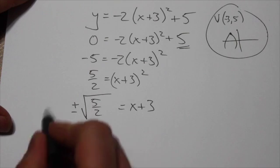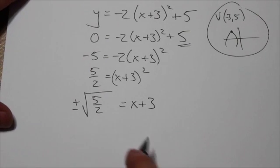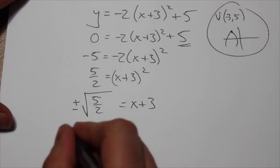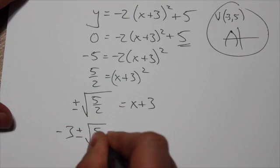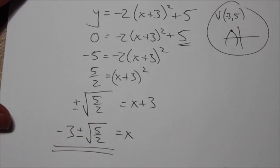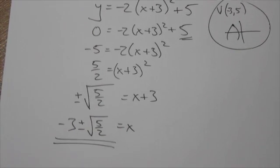When I bring that over, I'm going to put it in front. It's just a little bit easier to read if you do that. So I'm going to take that positive 3, subtract it from both sides, and it's going to be negative 3 plus or minus the square root of 5 over 2. And that's the answer that we're looking for.